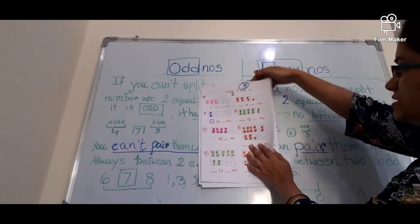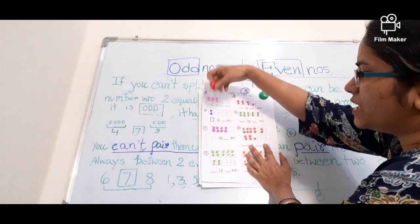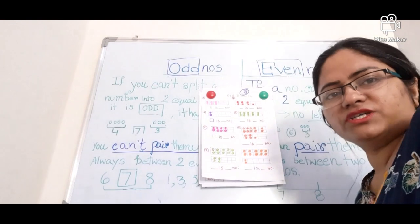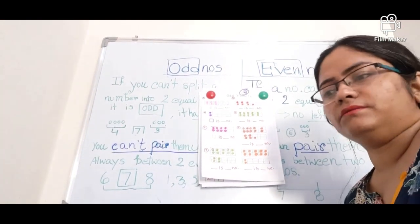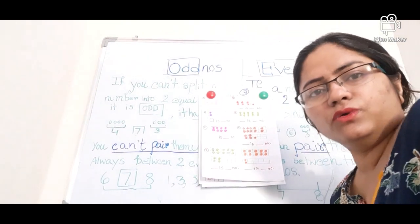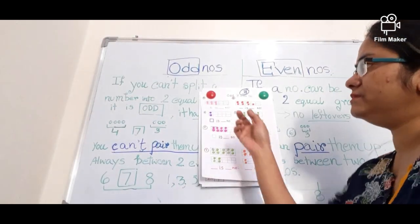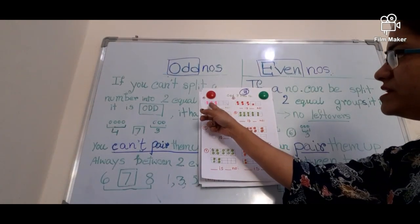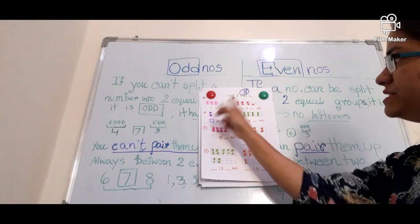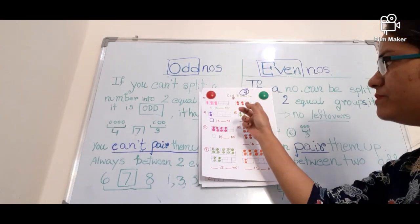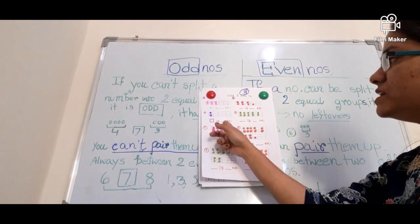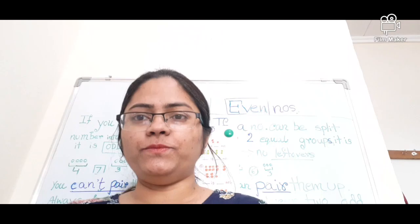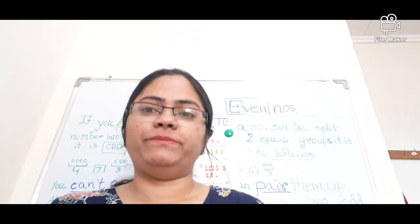The third kind of worksheet: I have drawn some 10-frames. I hope you have watched the 10-frame calculation before — if not, I will give the link in the description box so you can go through it and understand the 10-frame strategy. How many dots are here? Six — six is an even number, so you write 'even.' Seven dots — seven is an odd number. Two is an even number. Ten is an even number. Fill up the box like that.